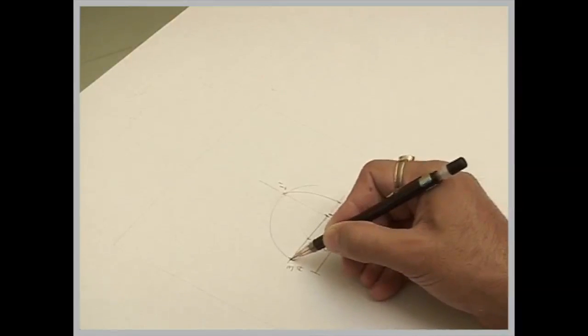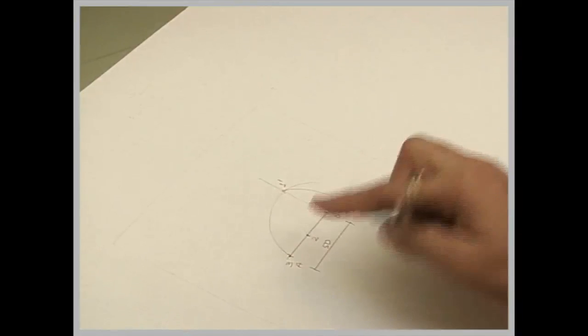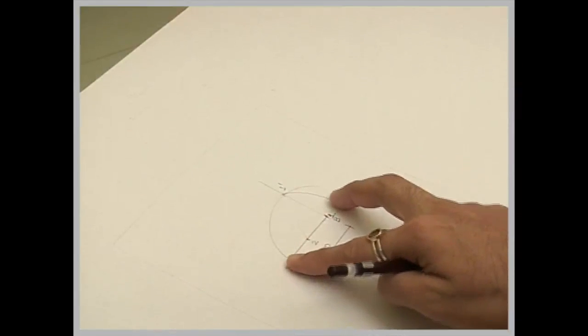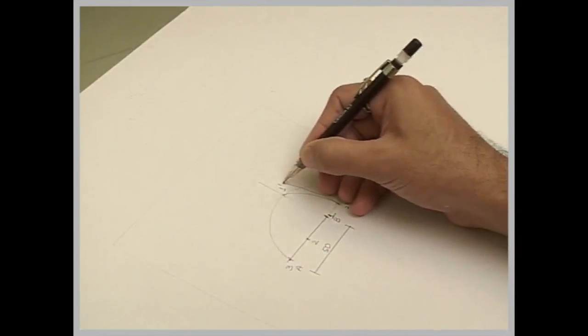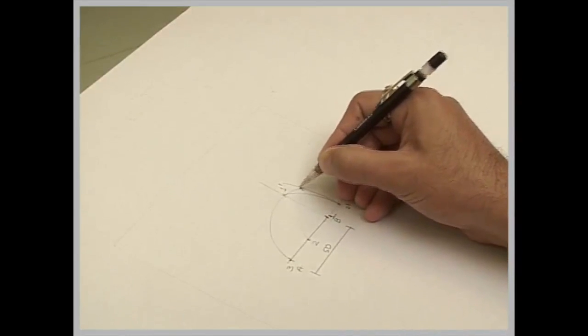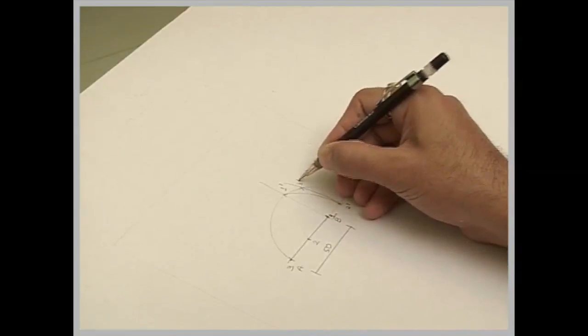From this point, I will mark it as 3. I will take 3 to 2' and draw another arc upward. Wherever it intersects, that is my point 3'.